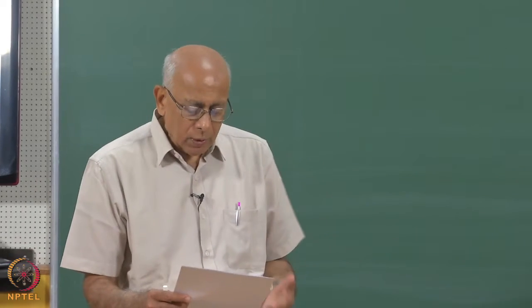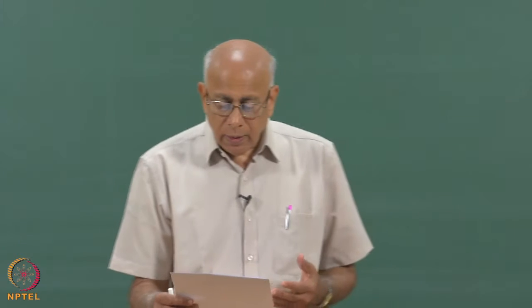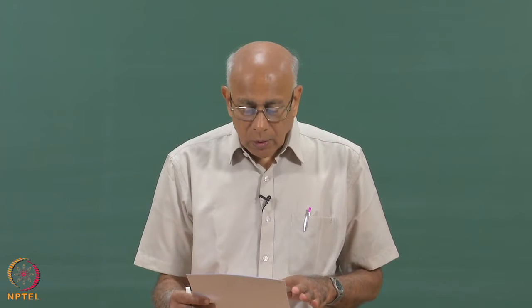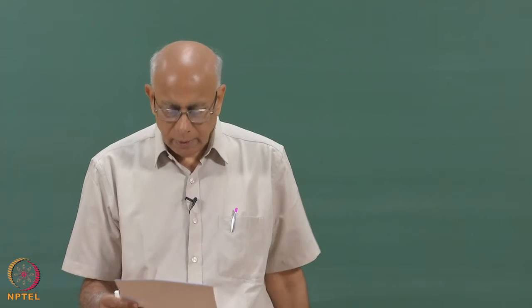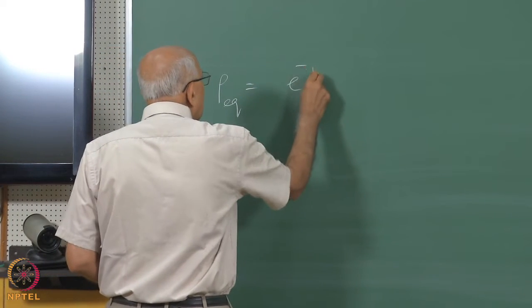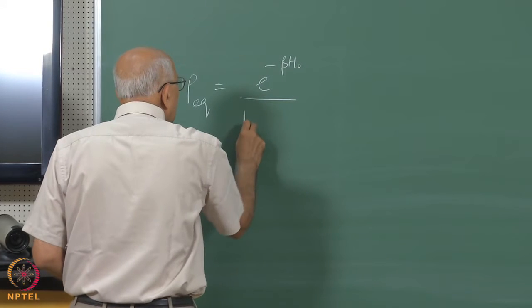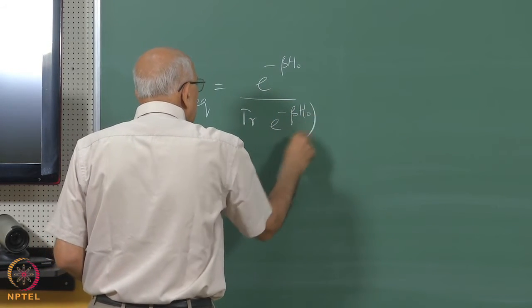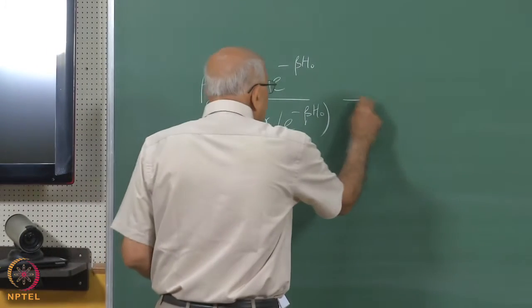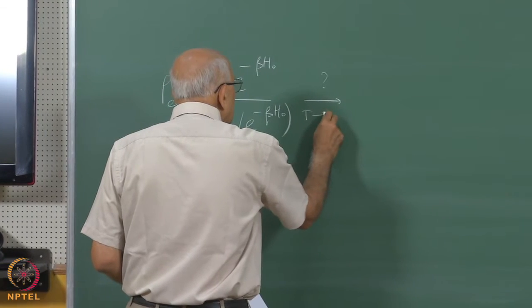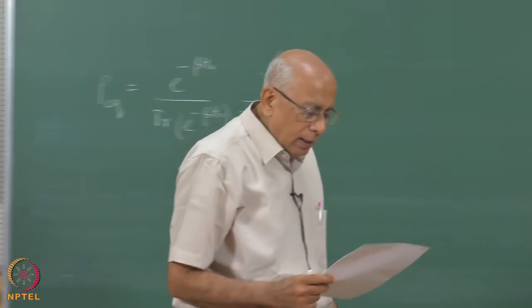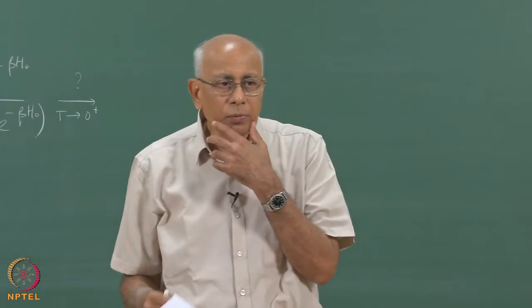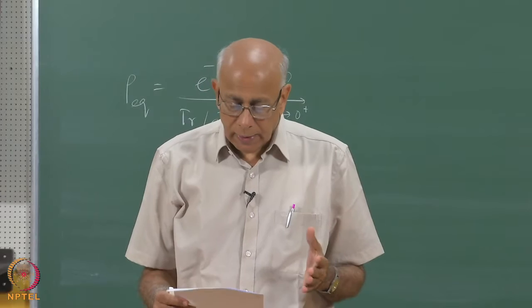The first question was true or false: consider a quantum mechanical system with Hamiltonian H-naught. Its normalized density operator in the canonical ensemble is given by e to the minus beta H-naught over the trace of the same thing. So rho-equilibrium equals e to the minus beta H-naught divided by its trace. The question asks what does this tend to as T tends to zero from above — as you go to absolute zero. The statement is that it tends to the unit operator. Is that true or false?